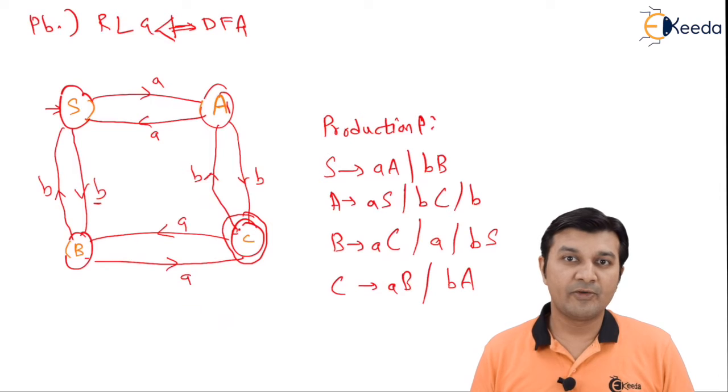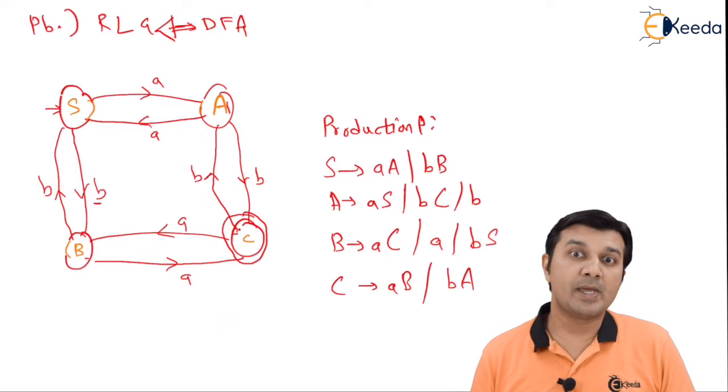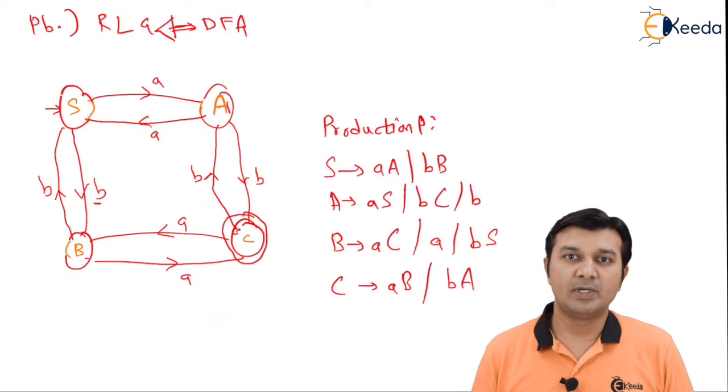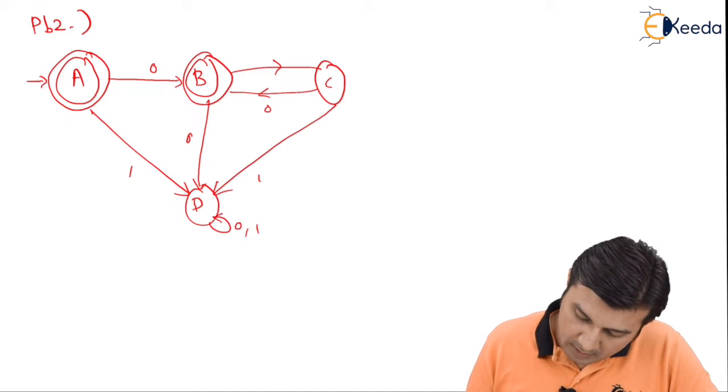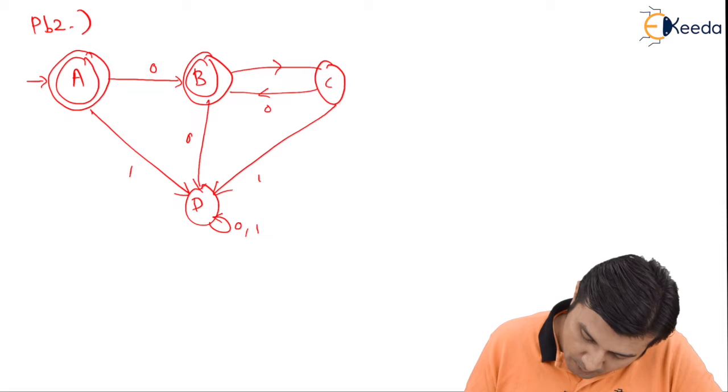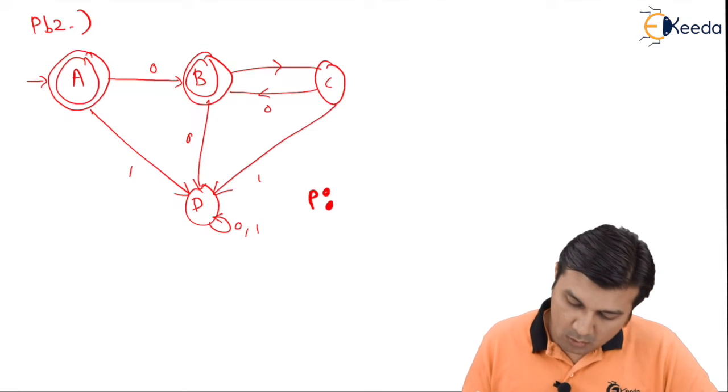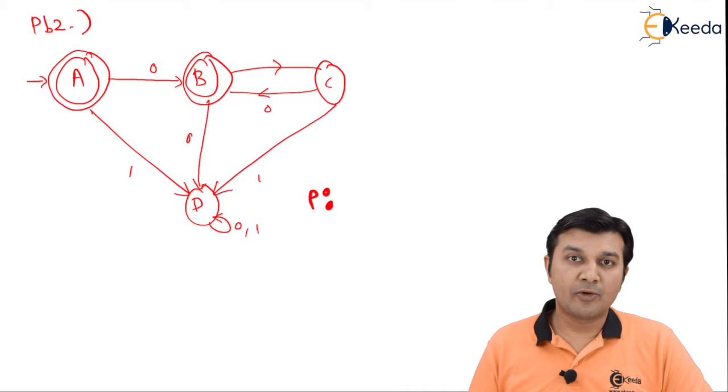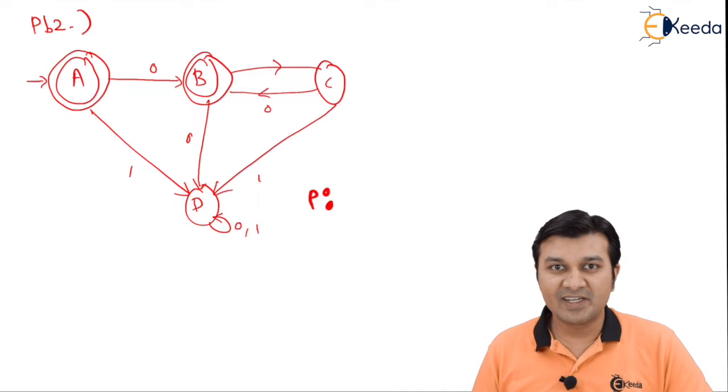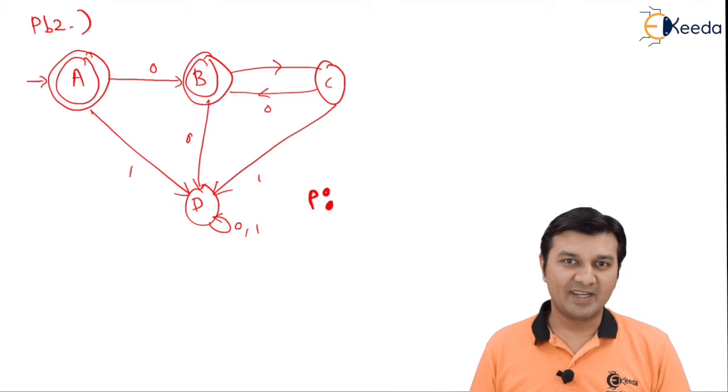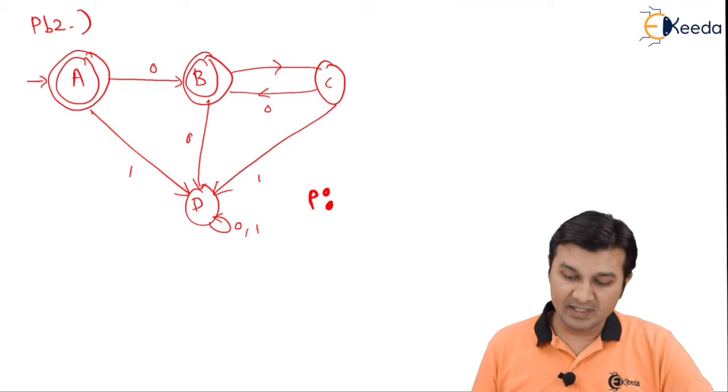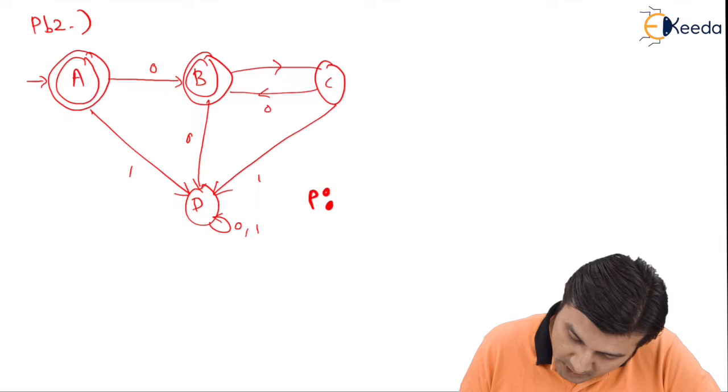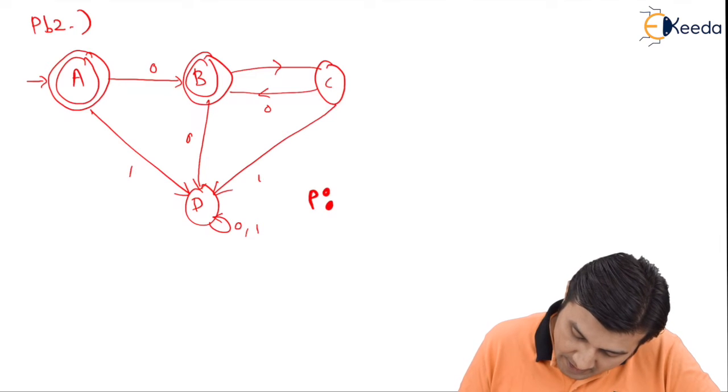Let us consider a problem wherein epsilon transition may be generated. In this diagram of problem 2, A is the start state as well as the final state. So, as per rule 1, if the start state is the final state, my A is going to derive me an epsilon.